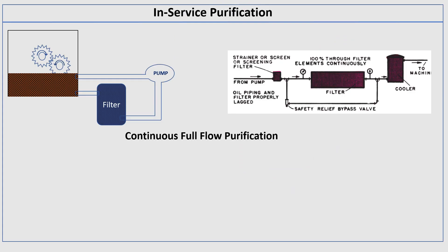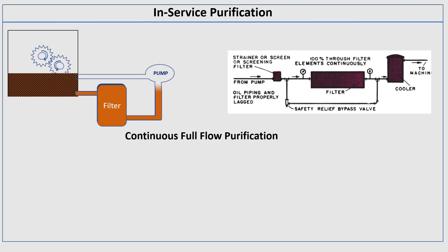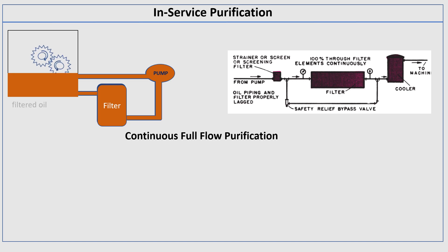Next we use in-service purification. In in-service purification, when your machine is in working condition, at the same time the contaminated lubricating oil is purified. The contaminated lubricating oil is passed through a filter to remove contaminants, and through a pump, so your contamination is reduced. After some time your contaminated oil is removed by full-flow purification, which filters all contaminated lubricating oil.